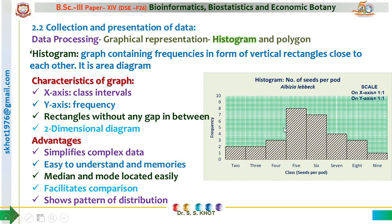In a histogram, we plot classes on the X axis and the frequency of each class on the Y axis. We draw a rectangle for each class, fill that area, and in this way the area graph represents a histogram.